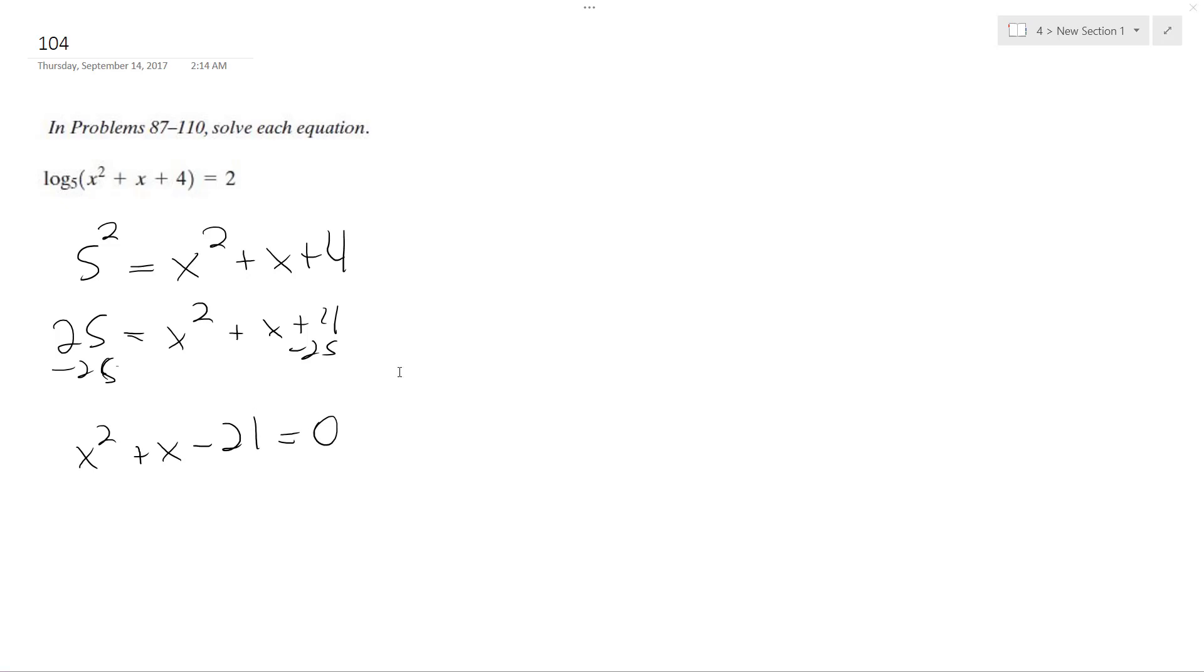So this doesn't look like it has a nice solution. I'm going to use the quadratic formula. Opposite of b plus or minus square root of b squared minus 4ac all over 2a.